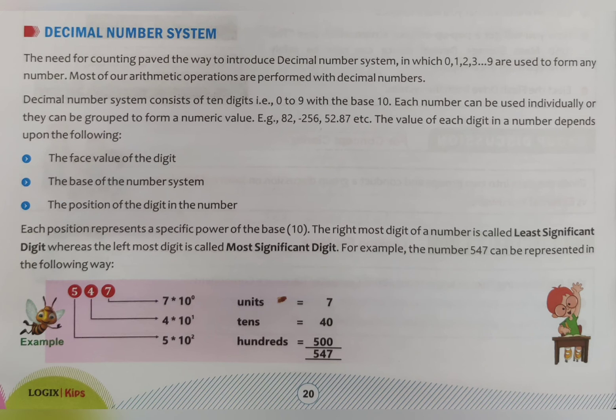Each digit can be used individually or grouped to form a number. For example, the digits 8 and 2 can be used separately — 8 is 8, 2 is 2 — or together they make 82. Other examples include numbers like 256, 52.87, etc.